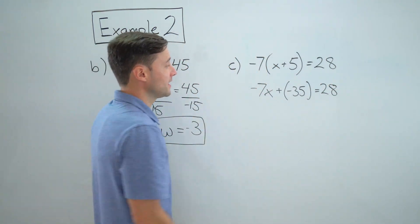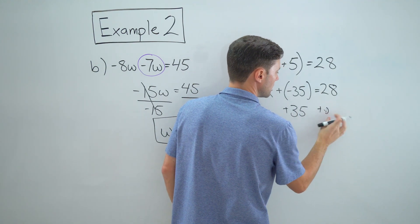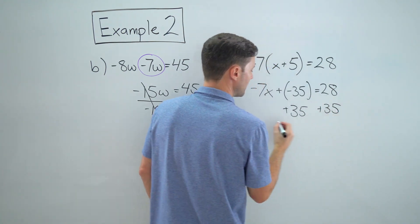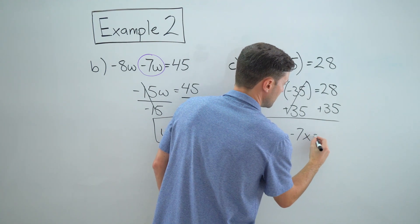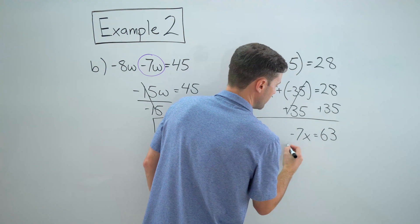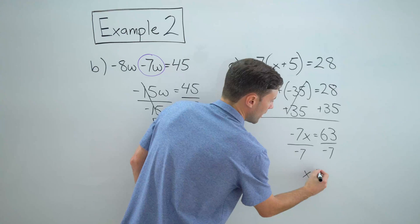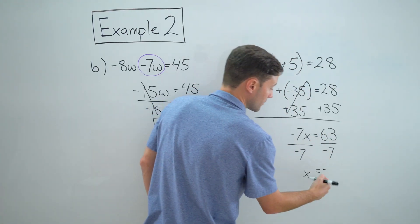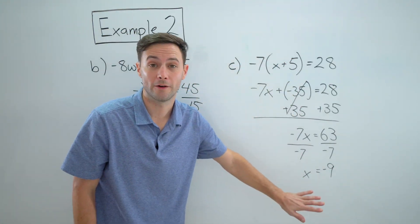And then obviously I can add 35 to both sides. Those go away. I've got negative seven x equals 63 and divide both sides by negative seven to get x alone. And I get x equals that's going to be different signs. So it's going to be negative and that's going to be negative nine. That's one way to do it.